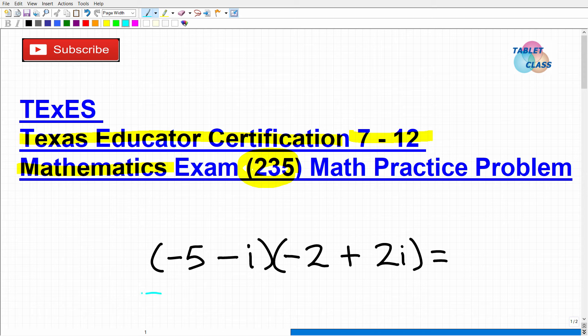So here is the problem. We have two complex numbers that we're trying to multiply. So we have negative 5 minus i times negative 2 plus 2i. Now, if you can figure this out, go ahead and put your answer into the comment section. I'll show you the correct answer in just one second. And, of course, I'll fully explain how to solve this problem.